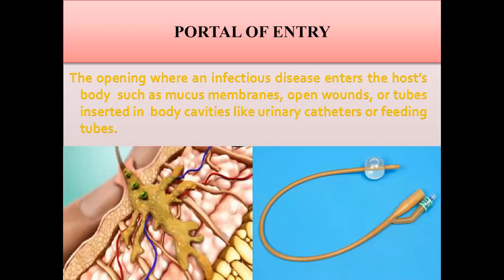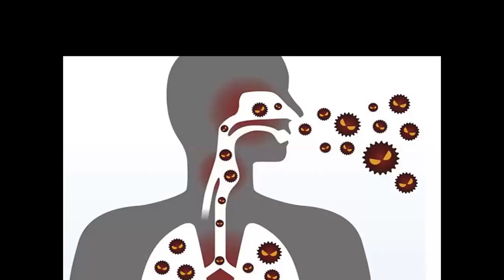After mode of transmission comes the portal of entry. A person releases droplets, which travel through the mode of transmission and reach a new host. The portal of entry is through your openings — the openings on your face: your eyes, nose, and mouth. These are all the openings through which the virus can enter your body.